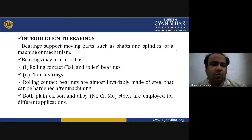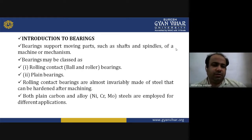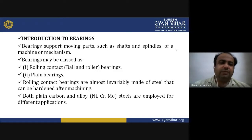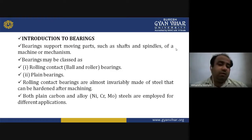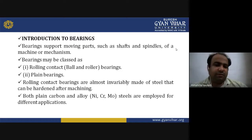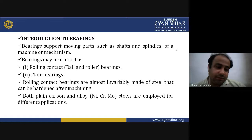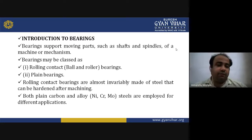Bearings support moving parts such as shafts and spindles of machines or mechanisms. They can be classified as rolling contact bearings — that is ball or roller bearings — and plain bearings. Rolling contact bearings are almost invariably made of steel that can be hardened after machining. Both plain carbon and alloy steels, with alloys such as nickel, chromium and molybdenum, are employed for different applications.